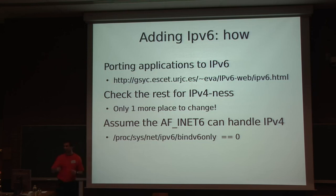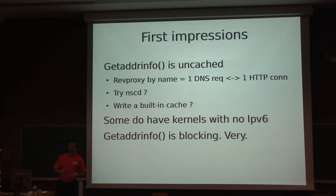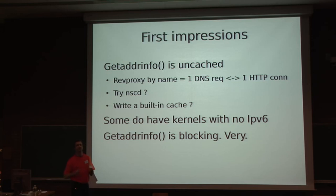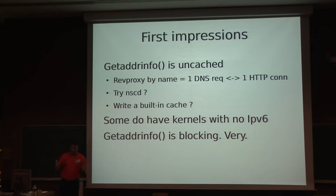Another assumption I made was that the BINDV6ONLY variable is set to zero — we'll talk about that variable a bit later. After shipping Mongrel 2 with IPv6 support, some interesting problems came up. First of all, getaddrinfo is not cached. So when used in a reverse proxy where the configuration specifies the target by name, per connection attempt to the backend server we have at least one DNS request — in reality two packets, the IPv4 and IPv6 resolution attempts.